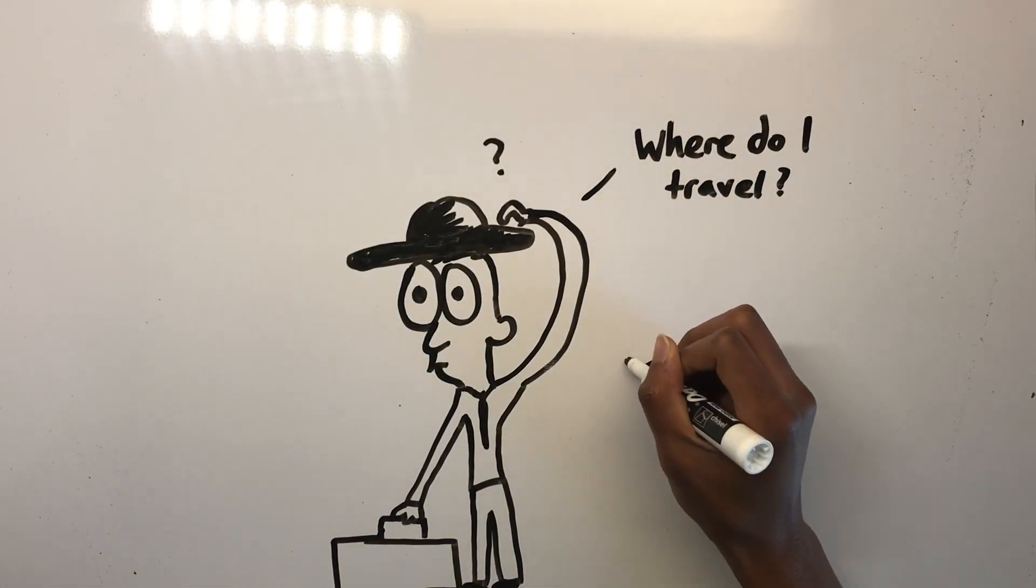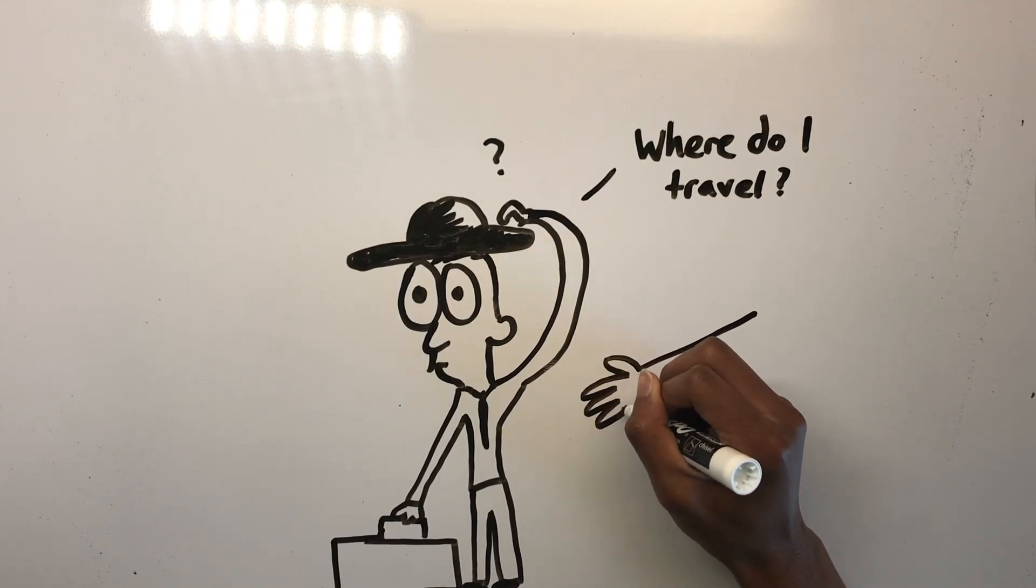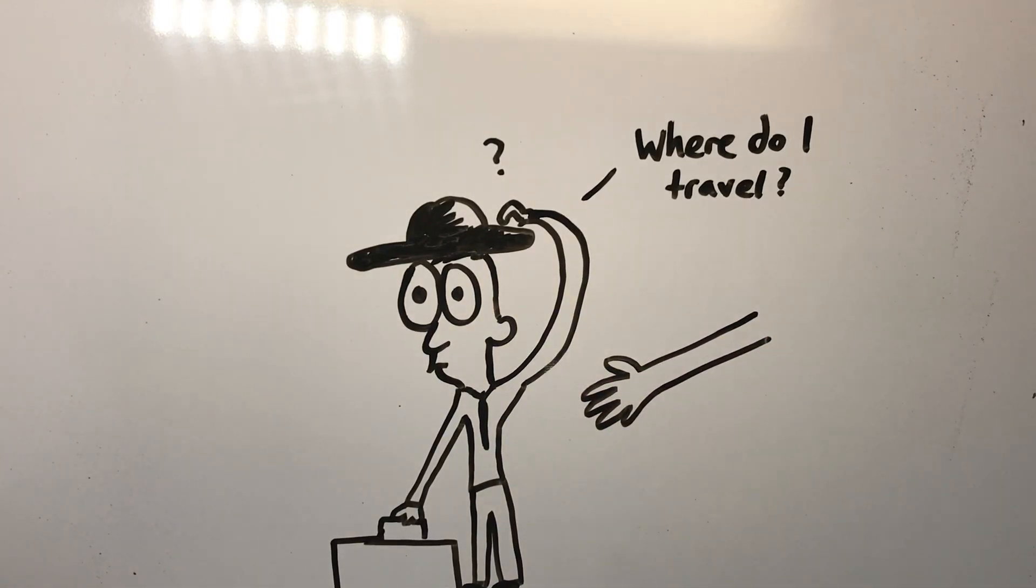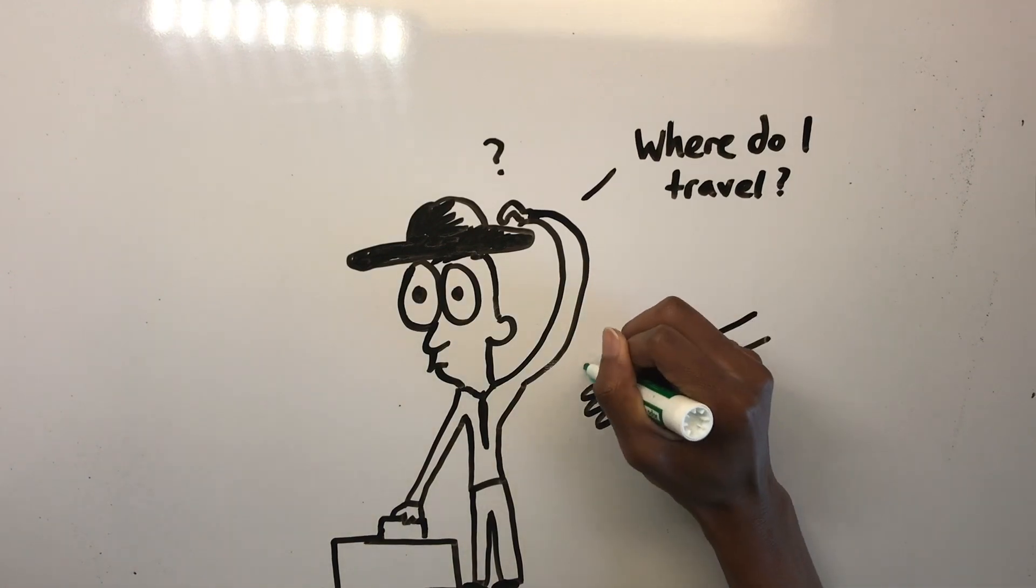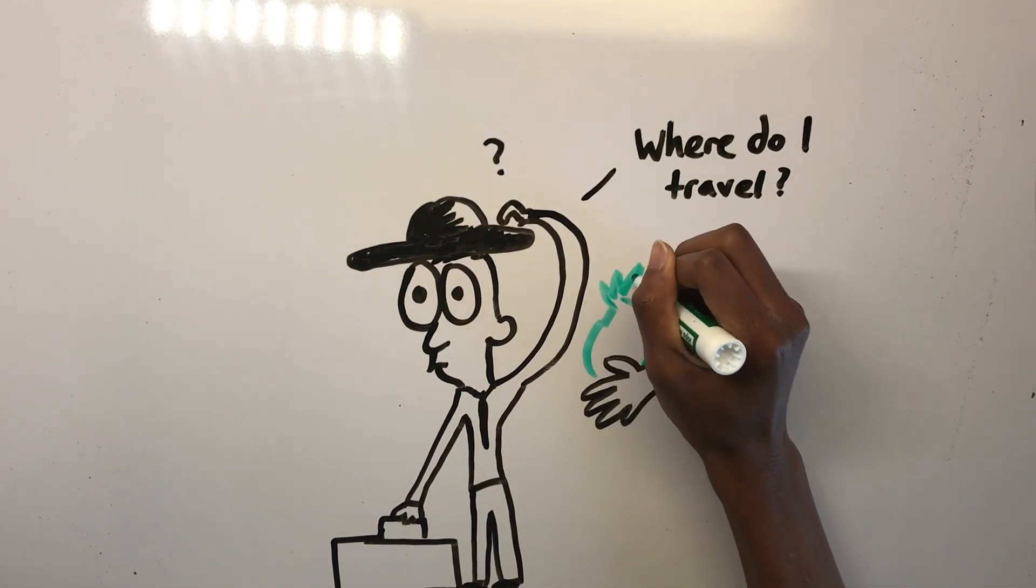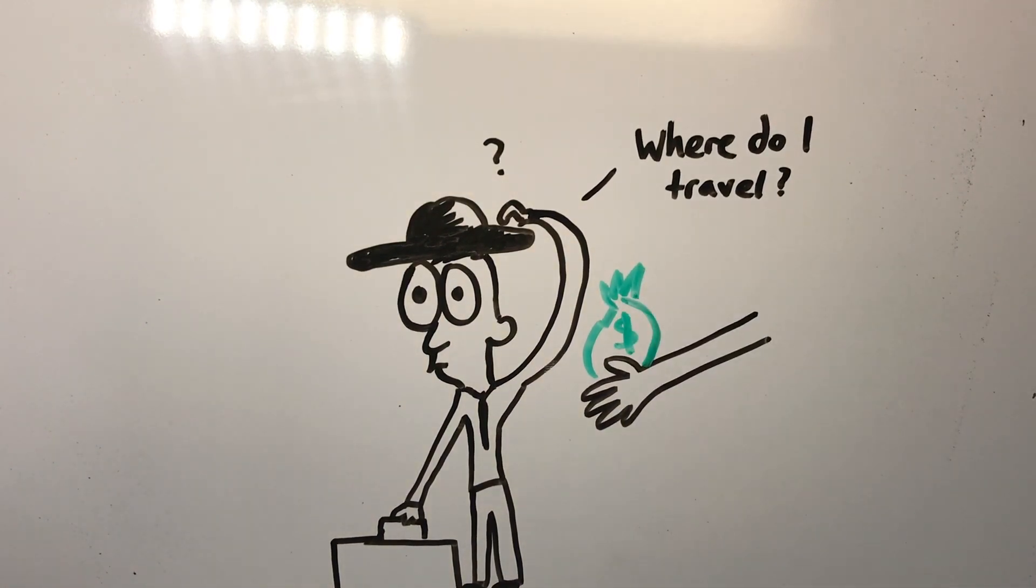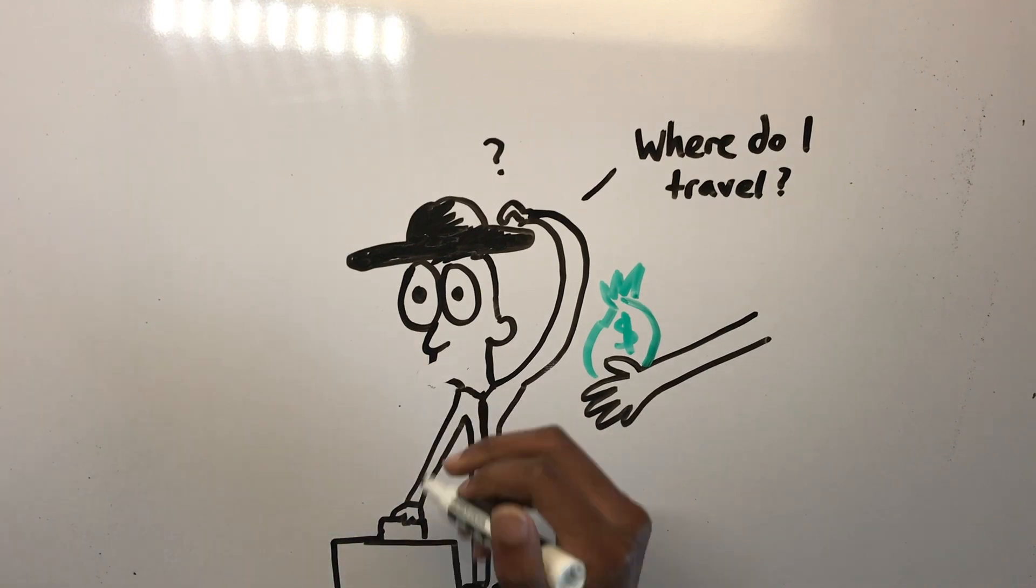Indeed, the resolution of the traveling salesman problem would settle the P versus NP problem and fetch a million dollar prize from the Clay Mathematics Institute. So what we're going to do in this video is solve the traveling salesman problem and collect our bag of money.